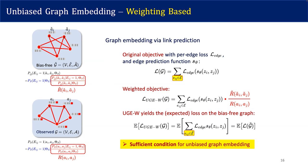It depends on the specific problem. Sometimes the weighting-based method achieves a better trade-off between utility and unbiasedness. Sometimes the regularization-based method performs better. And sometimes combining these two methods gives the most powerful results. But generally, our method based on learning from a bias-free graph can beat the baselines and previous methods on the utility and unbiasedness trade-off.